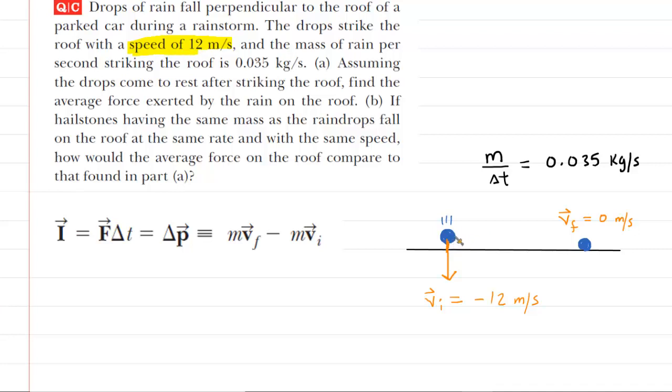We've drawn a picture over here showing a raindrop falling downward. Now, because it's falling downward, we're going to call the initial velocity of the raindrop negative 12 meters per second. Notice the negative sign indicating that that initial velocity is directed downward.